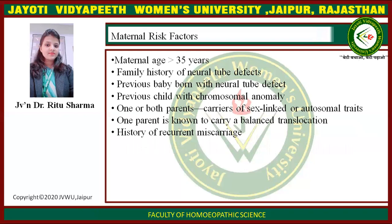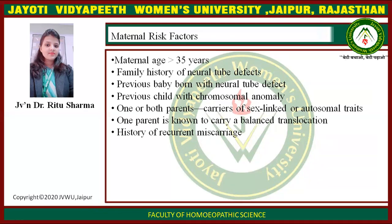Maternal Risk Factors: maternal age more than 35 years, family history of neural tube defects, previous baby born with neural tube defect, previous child with chromosomal anomalies, one or both parents carriers of sex-linked and/or autosomal traits, one parent known to carry a balanced translocation, or history of recurrent miscarriage.